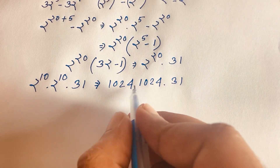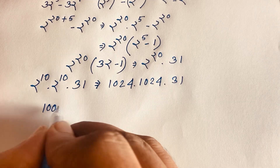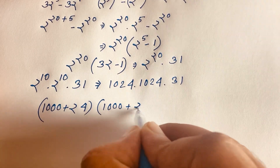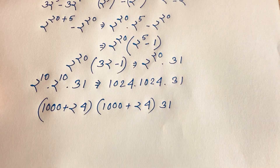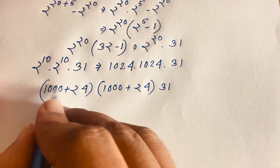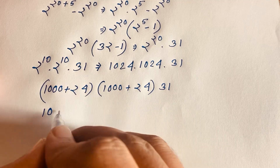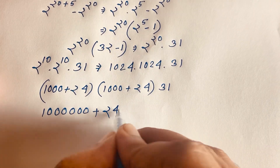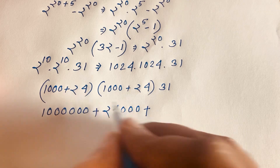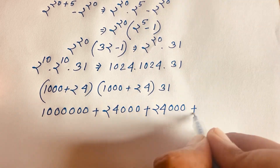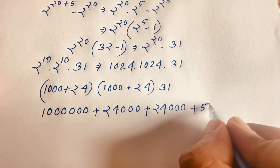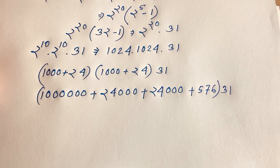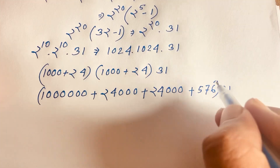To compute 1024 times 1024, I can write 1024 as 1000 plus 24. So we have (1000 plus 24) times (1000 plus 24) times 31. Expanding: 1000 times 1000 is 1,000,000; 1000 times 24 is 24,000; and 24 times 24 equals 576. This gives 1024 squared, which we then multiply by 31.